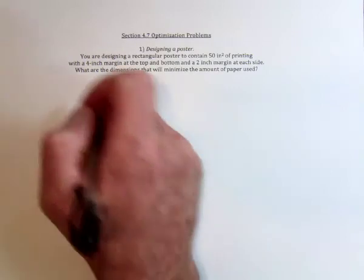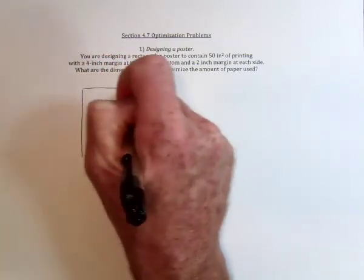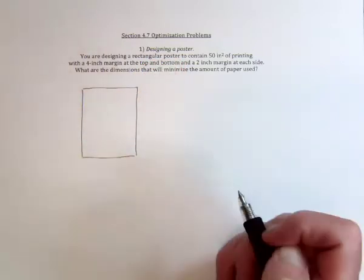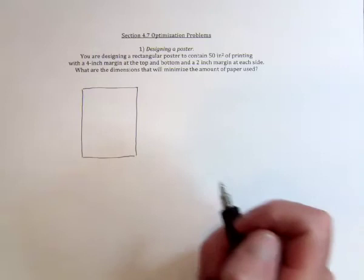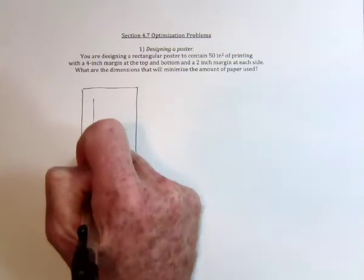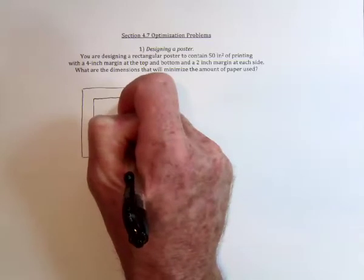So here's a great problem for you graphic design people out there. You've got a poster, so here's the outside of the poster. And inside that rectangular poster is supposed to be 50 square inches of printing, and there's a 4-inch margin on the top and the bottom, and a 2-inch margin on the left and the right.